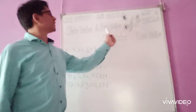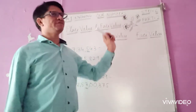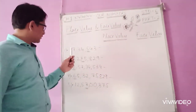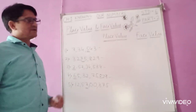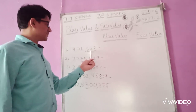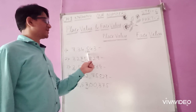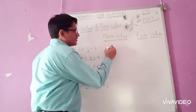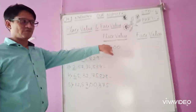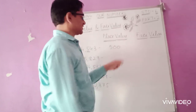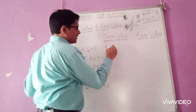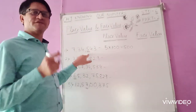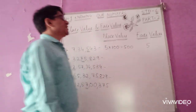Now we will learn about place value and face value. Place value means the number multiplied by the value of that place. For example, if 5 is in the hundreds place, the place value is 5 × 100 = five hundred. Face value means the value of the digit itself, so the face value of 5 is always 5.